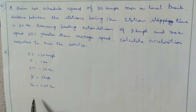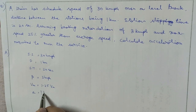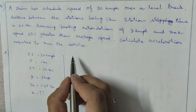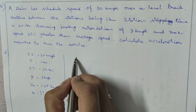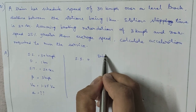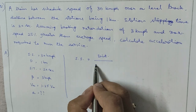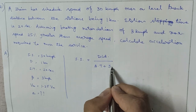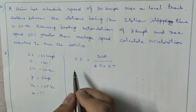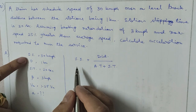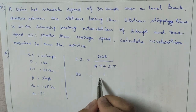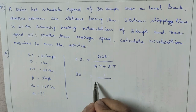We need to calculate the acceleration α required to run the service. The formula for schedule speed is: schedule speed = distance between stops divided by (actual time + stopping time). Substituting: 30 = 1 km divided by (actual time + stopping time).